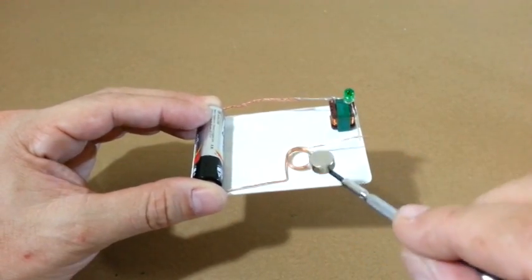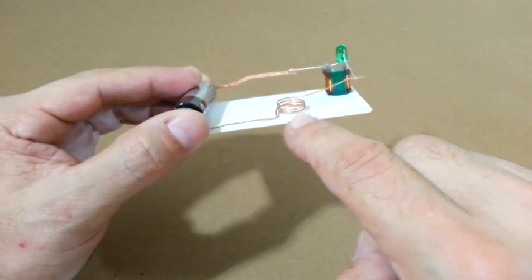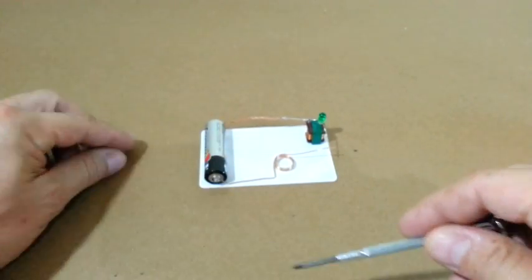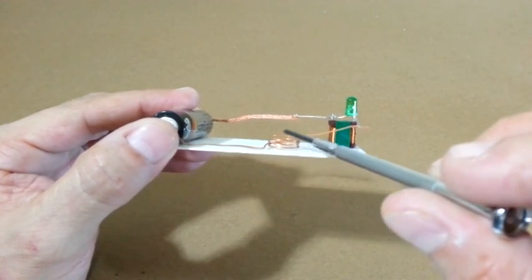And a neodymium magnet that is inside this little coil that has four turns. This coil can move in the vertical.